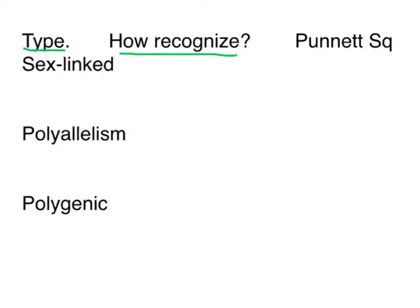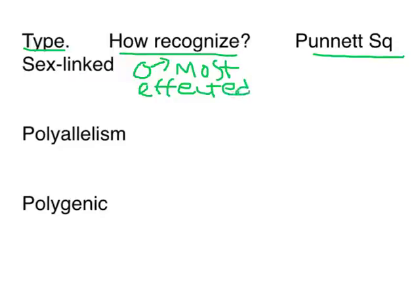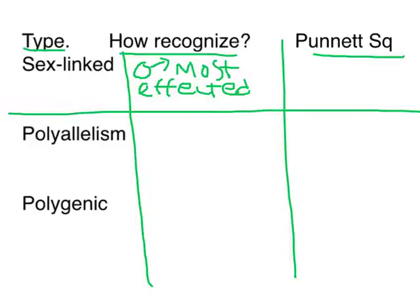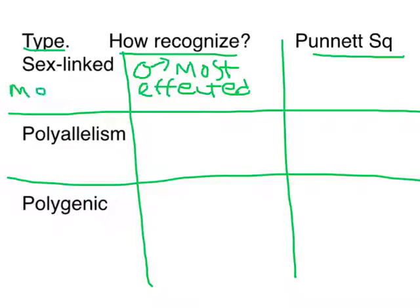The next type of inheritance is sex-linked. How do you recognize sex-linked? This is not autosomal — you still have a dominant and a recessive — but when it's sex-linked, the male is most often affected. Males get it most often in sex-linked traits because they only have one copy. These traits tend to go from mom to children, and only females can carry a sex-linked trait.